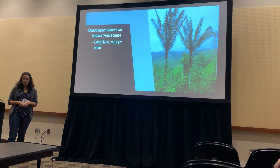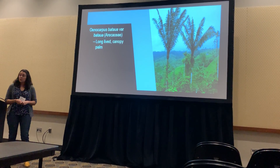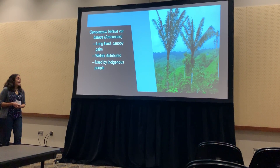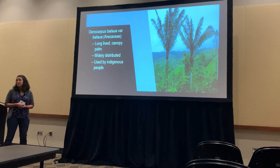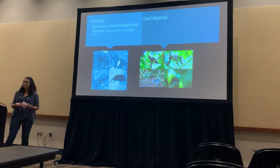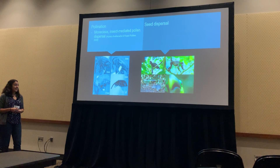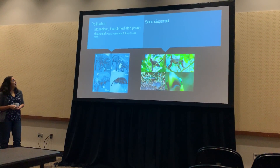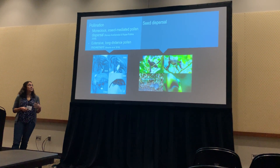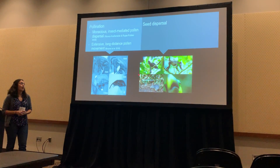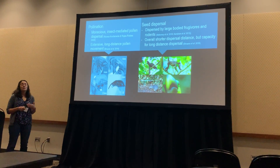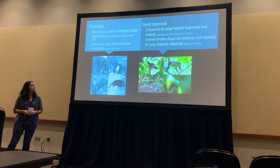To address these research objectives, I use the species Oenocarpus bataua, which is a long-lived canopy palm tree. It's widely distributed throughout South America and is of economic importance as it's used by a variety of indigenous groups. It's a monoecious species, although highly outcrossed. It's mostly pollinated by tiny little beetles, and they've been shown to move pretty long distances with a lot of extensive pollination. Seeds are dispersed by a variety of large-bodied herbivores and also rodents. Overall, seeds are dispersed shorter distances, but there is the capacity for long-distance seed dispersal as well.